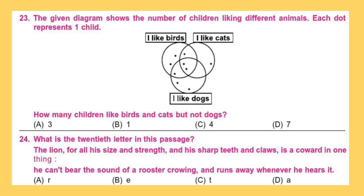Question 24. What is the 20th letter in this passage? The lion, for all his size and strength and his sharp teeth and claws, is a coward in one thing. He can't bear the sound of a rooster crowing and runs away whenever he hears it.